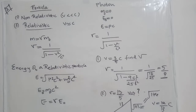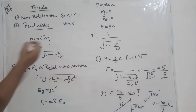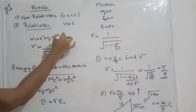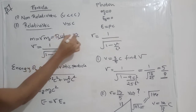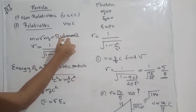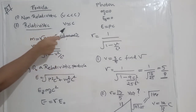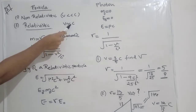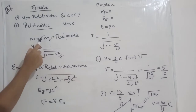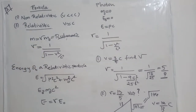Considering the mass of a relativistic particle: M is equal to gamma times M₀, where M₀ is the rest mass — that is, when velocity is equal to zero, the mass is M₀. For a relativistic particle moving with velocity comparable to the speed of light, the mass changes by gamma times. Gamma is the relativistic factor: gamma equals 1 divided by the square root of (1 minus V² / C²).